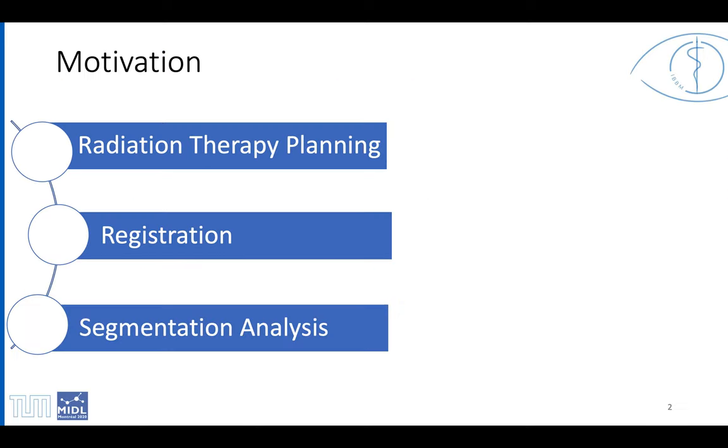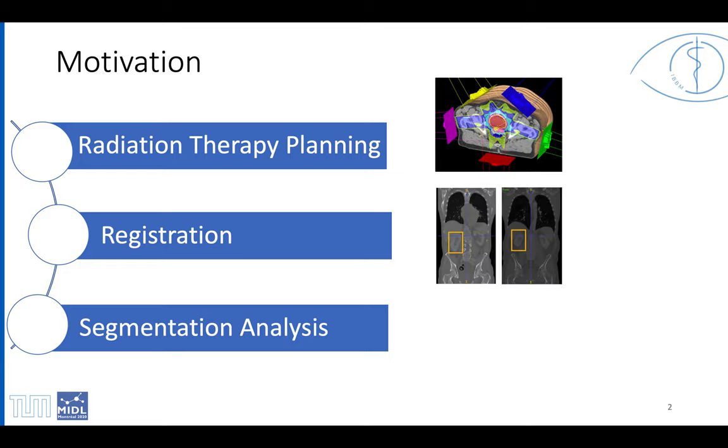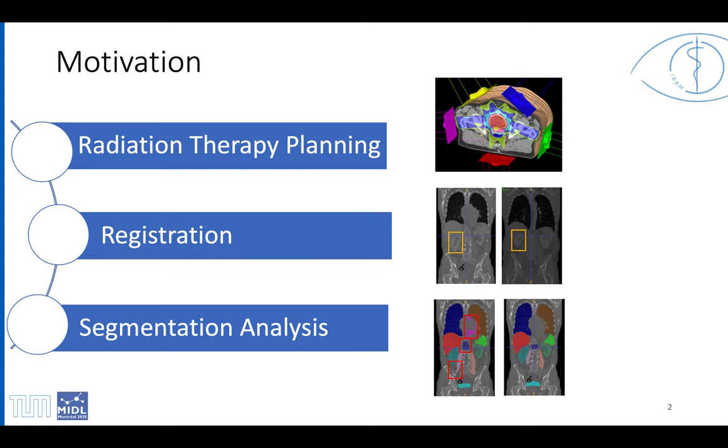Organ localization is a constant preprocessing step in medical imaging. For instance, in radiation therapy, it is required to automatically detect organs at risk. Similarly, organ-to-organ registration of pre- and post-operative images is less computationally expensive. Lastly, with organ localization, we can reduce the false positives in segmentation algorithms.